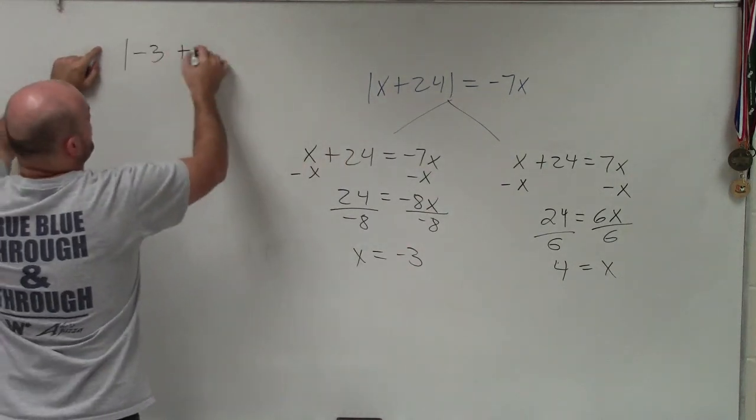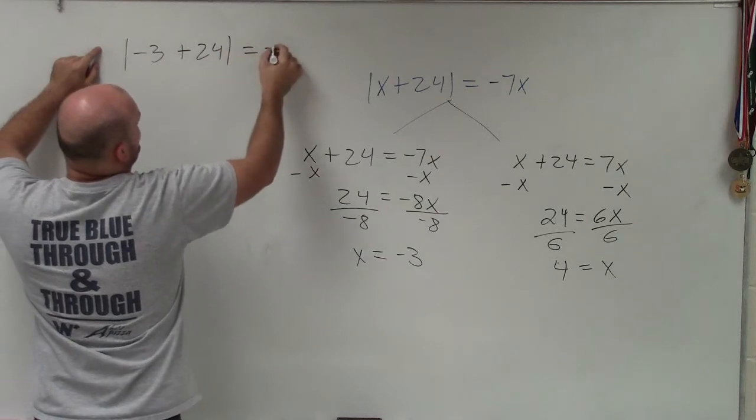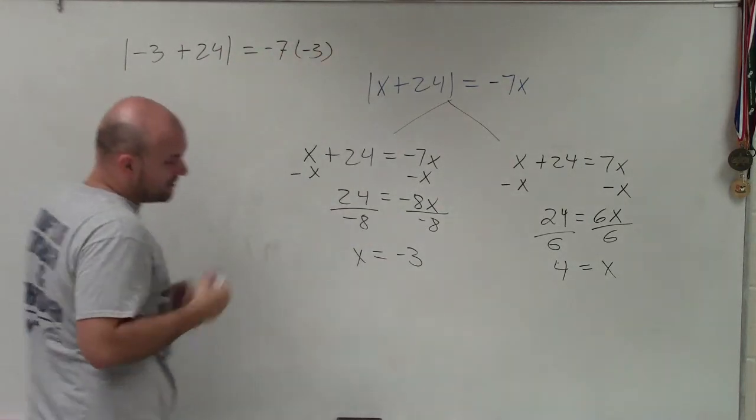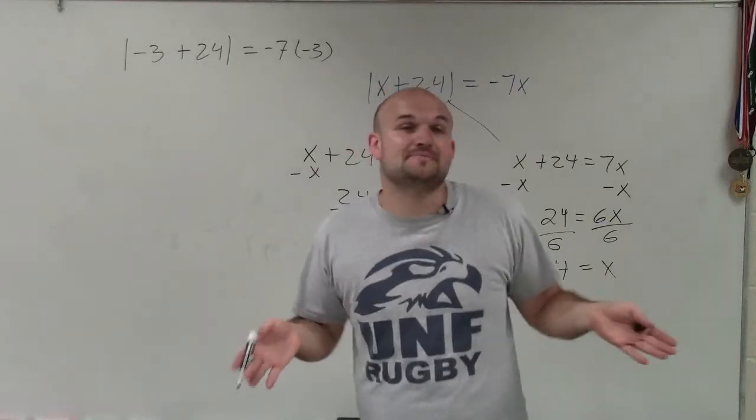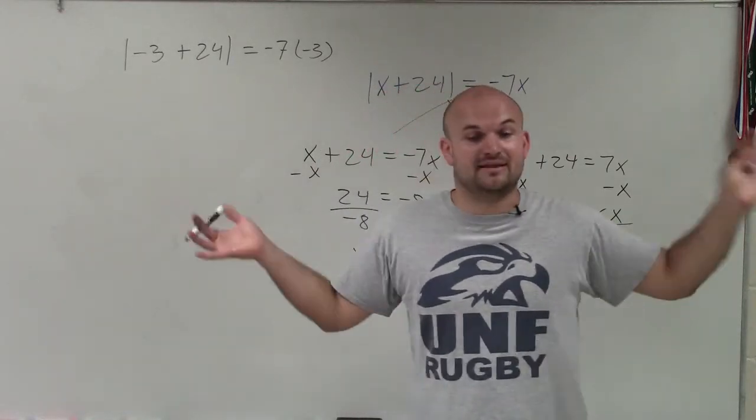So negative 3 plus 24 equals negative 7 times negative 3. And this one's important because a lot of people say, oh, once an absolute value equals a negative, then that's no solution. But be careful because that equals a negative times your variable.